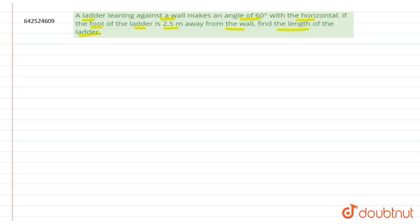Let us make the figure. A ladder is leaning against a wall, so this is the wall and this is the ladder which is leaning against it and making an angle of 60 degree with the horizontal.